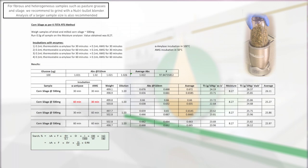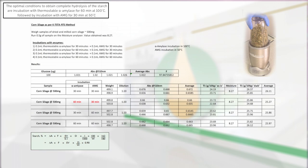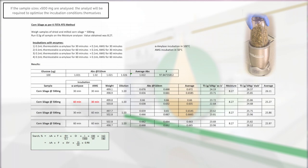Fibrous and heterogeneous samples such as pasture grasses and silage are hard to grind through a conventional fridge-type mill. Consequently, we recommend the use of a Nutribullet blender. The recovered ground samples are slightly more heterogeneous than materials processed through a fridge mill, so we also recommend analysis of a larger sample size. The starch values obtained for samples of silage of approximately 500 mg analysed according to the RTS format show that the optimal conditions to obtain complete hydrolysis of the starch are incubation with thermostable alpha amylase for 60 minutes at 100 degrees Celsius, followed by incubation with amyloglucosidase for 30 minutes at 50 degrees Celsius. If sample sizes greater than 500 mg are analysed, the analyst will be required to optimise the incubation conditions themselves.